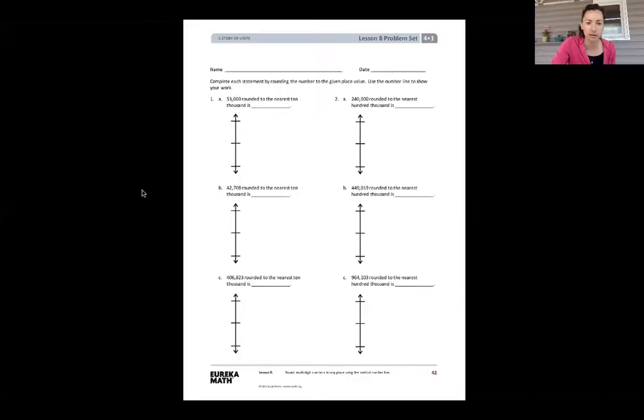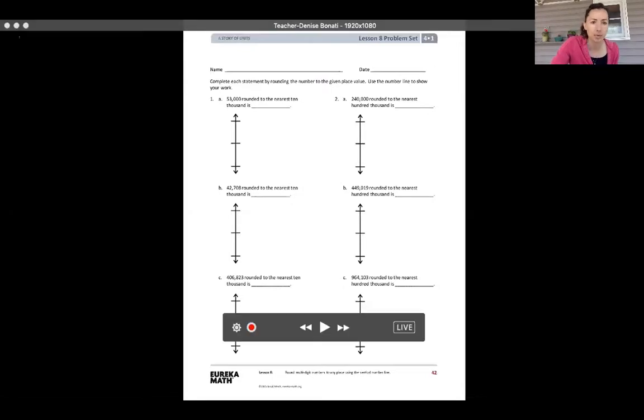Hi fourth grade, this is Mrs. Asherl. Today I am working with you on Module One, Lesson Eight, and our objective is to round multi-digit numbers to any place using the vertical number line. Vertical is like a column or a pillar, so that's up and down. All right, let's go ahead and take a look at our problem set today.